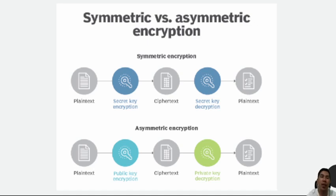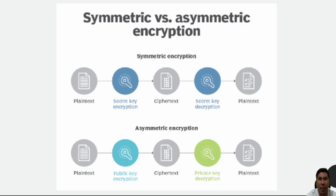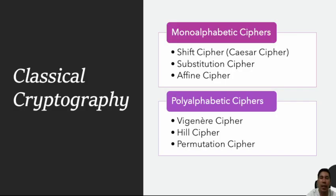In asymmetric cryptography, a public key is associated with the sender for encrypting the message, and a private key is used only by the originator for decrypting — unless it is exposed or they decide to share it. Examples of asymmetric key cryptography include RSA, Elliptic Curve Digital Signature Algorithm (ECDSA), Digital Signature Algorithm (DSA), and many more.